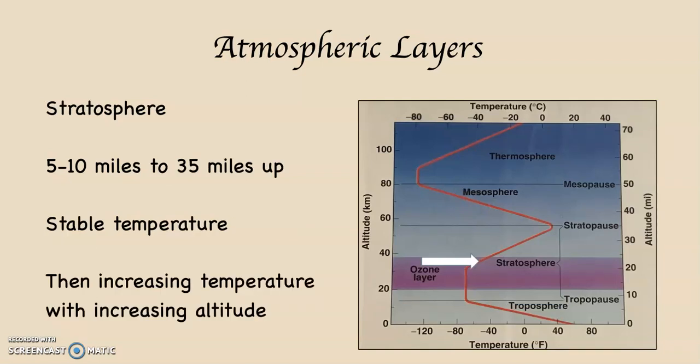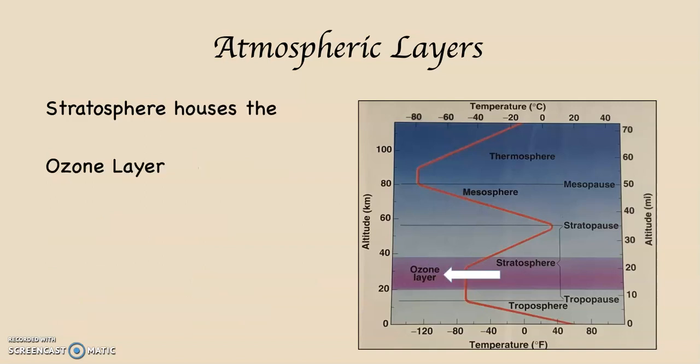That next layer is called the stratosphere. The stratosphere starts at about five to ten miles up and its ceiling is about 35 miles up. The temperature profile is a little odd. At first, air temperature remains the same as you increase altitude up to about 20 miles. It's really cold, like minus 70, but it remains minus 70 up until about 20 miles. Then air temperature increases with increasing altitude up to about 35 miles. The ozone layer is in the stratosphere, which is one reason for that odd profile.